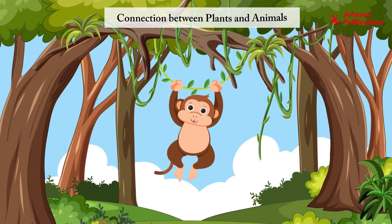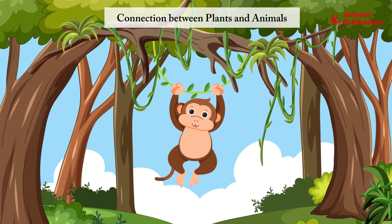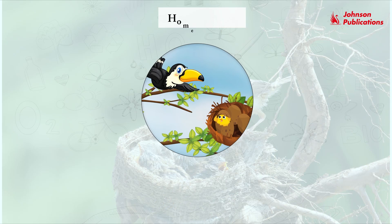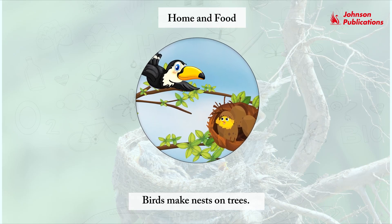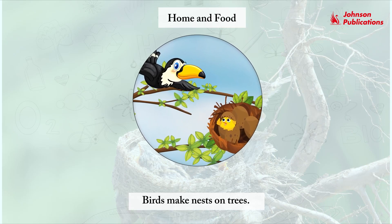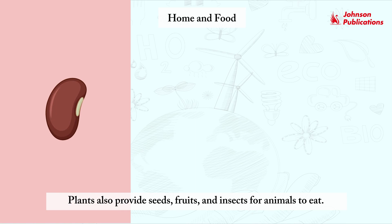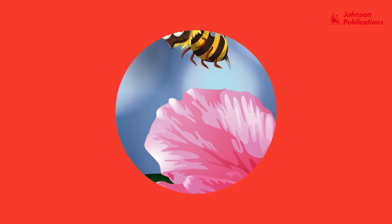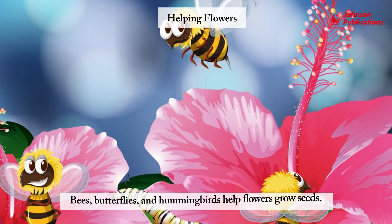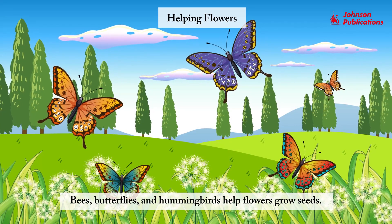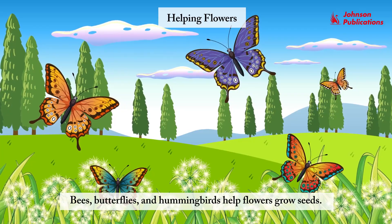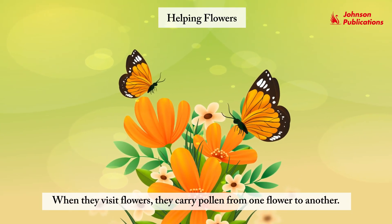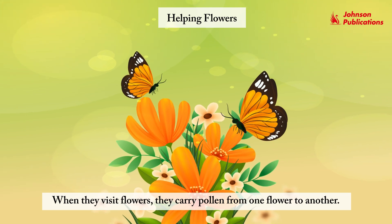Connection between plants and animals. Plants and animals help each other in many ways. For home and food, birds make nests on trees. Plants also provide seeds, fruits and insects for animals to eat. Bees, butterflies and hummingbirds help flowers grow seeds. When they visit flowers, they carry pollen from one flower to another.